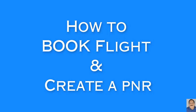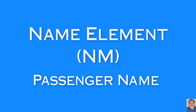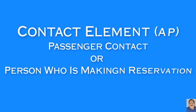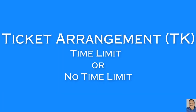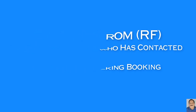Let's first learn how to book a flight and create a PNR. PNR stands for Passenger Name Record and contains five mandatory elements: the Name element, which is the passenger name; the Itinerary, which is the booked flight or other service; the Contact element, which is contact information for the passenger or the person making the reservation; the Ticket Arrangement element, which indicates whether the PNR has a time limit or no time limit; and the Received From element, the name of the person who has asked for or is making the booking.